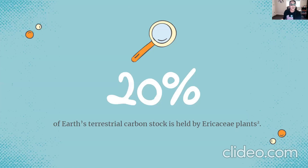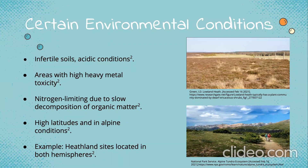So why should we care about this interaction? It is estimated that Ericaceae plants hold 20% of Earth's terrestrial carbon stock. Keep in mind from unit 1 that storing carbon is an important part of mitigating the effects of climate change. Thus, this interaction is not negligible and certainly worthy of further investigation. The environmental conditions at which this association occurs are in infertile and acidic soils with low nutrient concentrations within the soil solution.